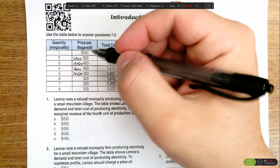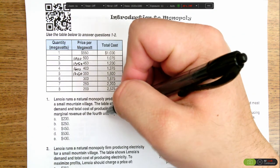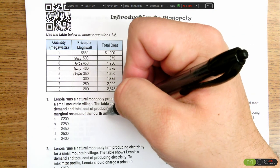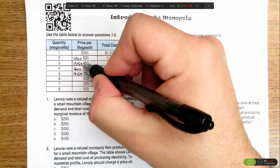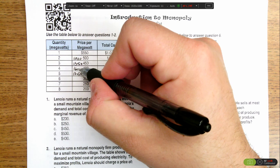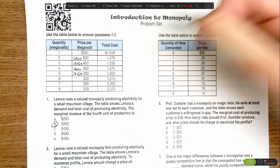We have enough information to answer the question. The fourth megawatt is going to bring additional revenue of $250 because we're going from $1,350 in revenue to $1,600. So the answer is $250 is the marginal revenue of that fourth unit of production.